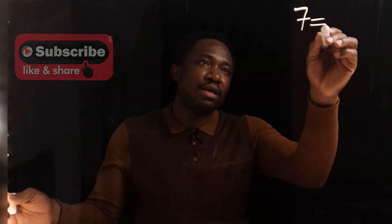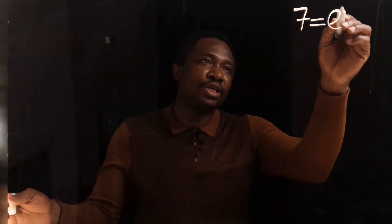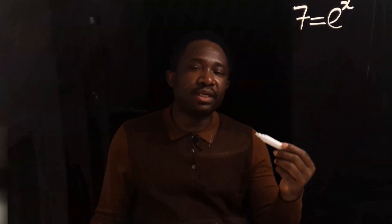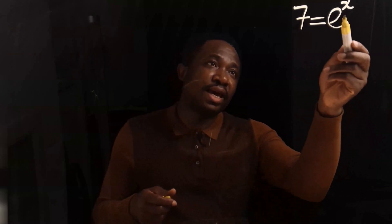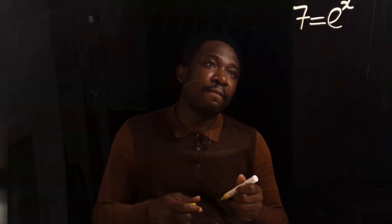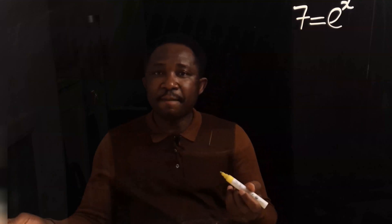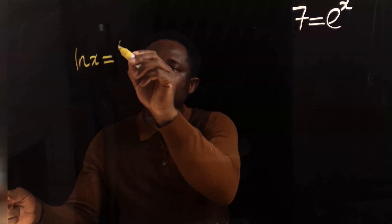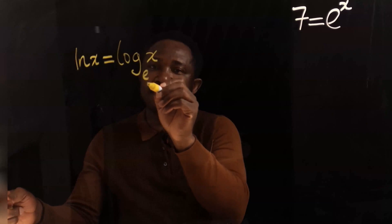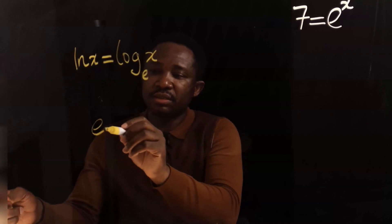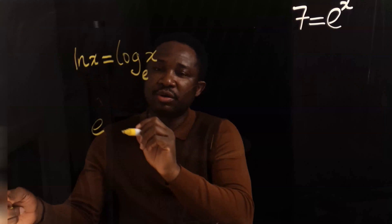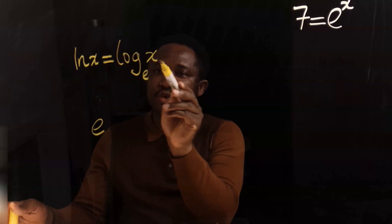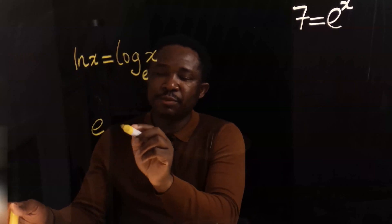Consider 7 is equal to exponential x. Our aim here is to make x the subject, but x is held here by exponential. In mathematics, the natural log of x is the same thing as log x of base e. Exponential neutralizes natural log. Whenever you want to release x from natural log, you are going to introduce exponential.